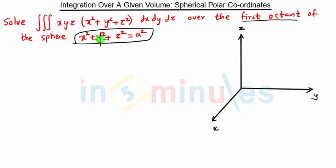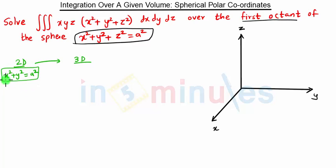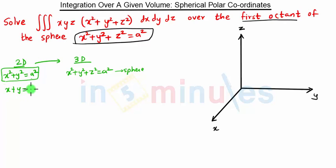To understand why this is a sphere, remember that every 2D equation can be converted into a 3D equation. For example, if we have a circle equation x² + y² = a² in 2D, then in 3D the equation becomes x² + y² + z² = a², which is a sphere. Similarly, the equation of a line x + y = a in 2D becomes a plane x + y + z = a in 3D.